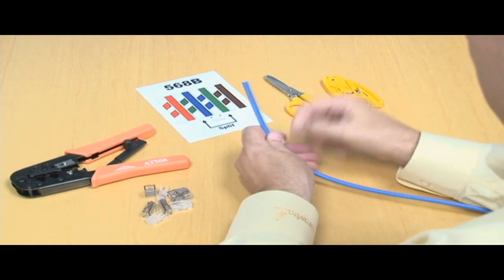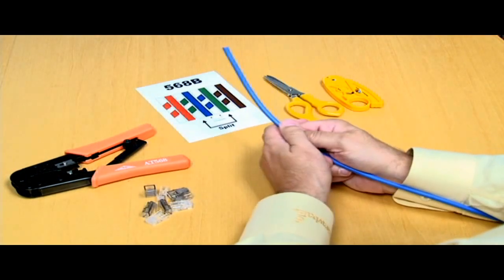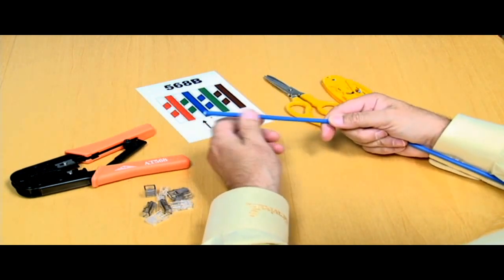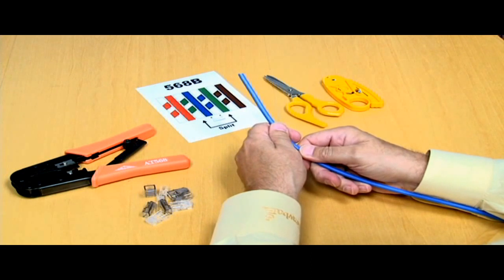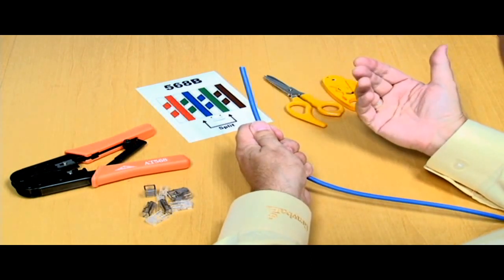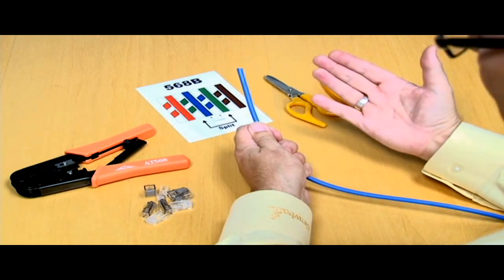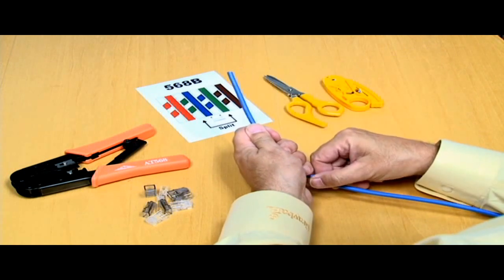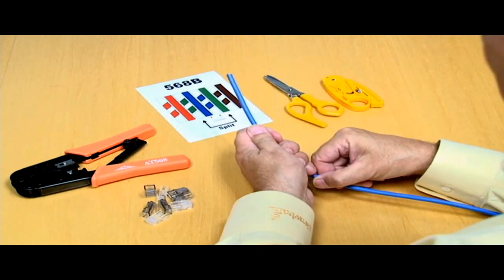Today we will demonstrate how to put a modular plug on the end of a category cable. We're going to demonstrate this with the most difficult cable, a category 6 cable. There are other category cables, category 5 and 5E, and they'll be a little easier to do this task. So we will put a modular plug on the end of this category 6 cable, and we call that direct attach.